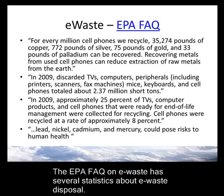A few more statistics from the EPA on e-waste: for every million cell phones we recycle, we recover 35,000 pounds of copper, 772 pounds of silver, 75 pounds of gold, and 33 pounds of palladium. Recovering materials from used cell phones can reduce extraction of raw materials from the earth. In 2009, discarded TVs, computers, peripherals including printers, scanners, fax machines, mice, keyboards, and cell phones totaled about 2.37 million short tons. Approximately 25% of TVs, computer products, and cell phones ready for end-of-life management were collected for recycling. Cell phones were recycled at a rate of approximately 8%. Lead, nickel, cadmium, and mercury could pose risks to human health.